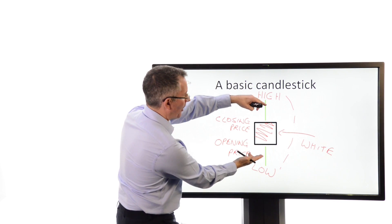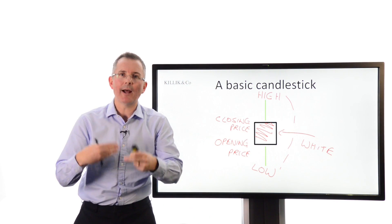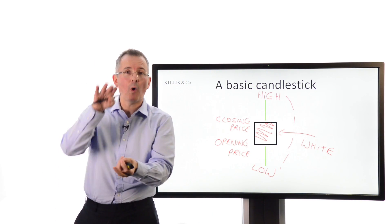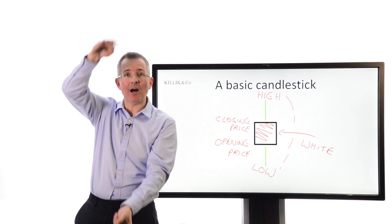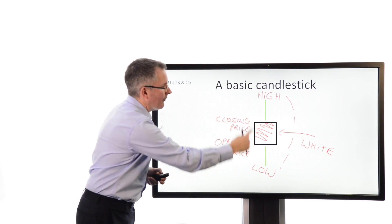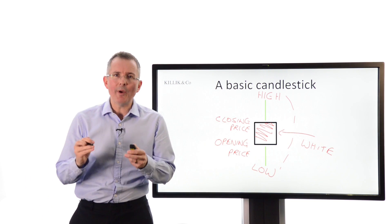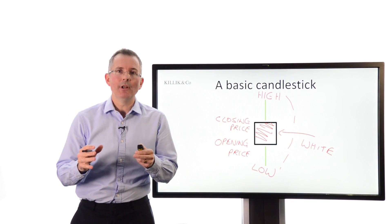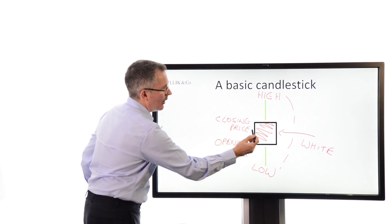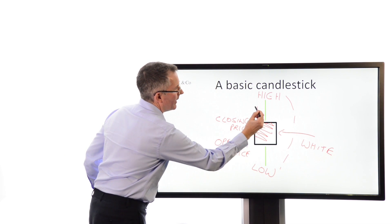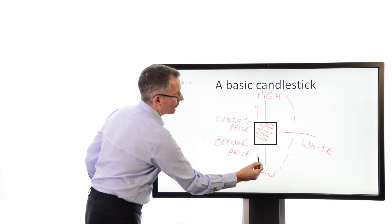If they're quite near the box, then the share price didn't move around much on that particular trading session. And one candle only represents one session, a day for example. Whereas if they're miles apart, then you had quite a lot of volatility within the particular session. Now, this is quite useful because you'll see candles where the box is quite near the top or the box is quite near the bottom.